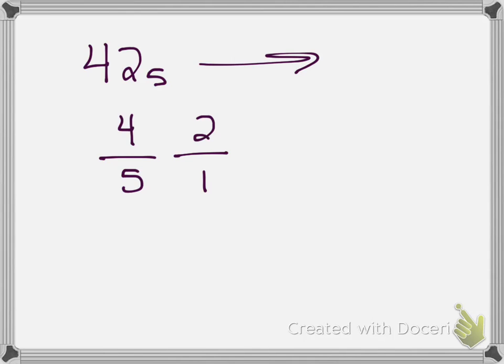So now, let's pretend that we have the number 42 base 5, and we want to know what is that in our number system. So we've got 1's and 5's. So I have 4 of these and 2 of these. So I have 4, 5, so that's 20, plus 2, equals 22. Alright, so you try it.